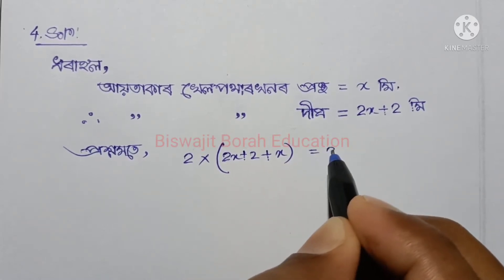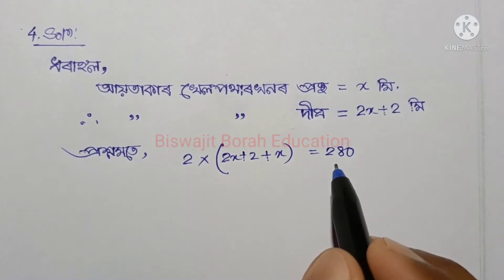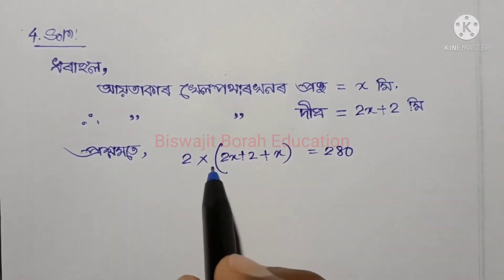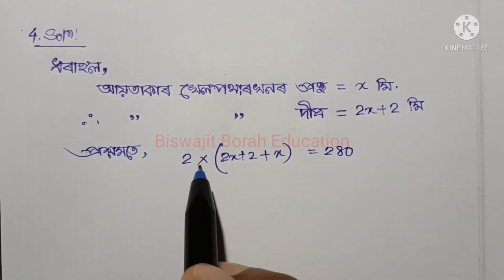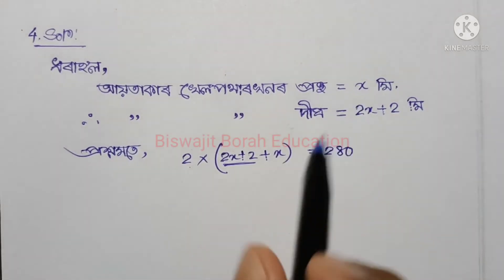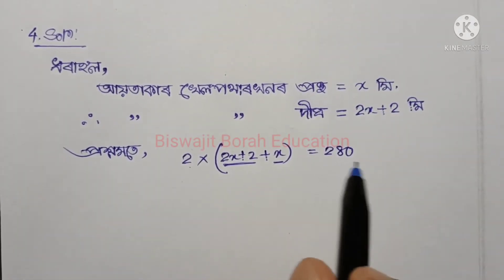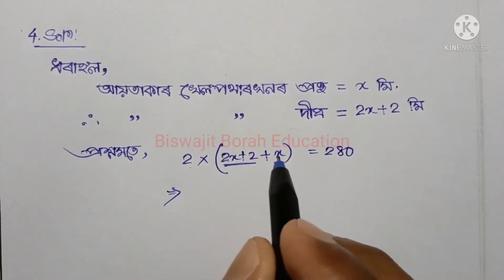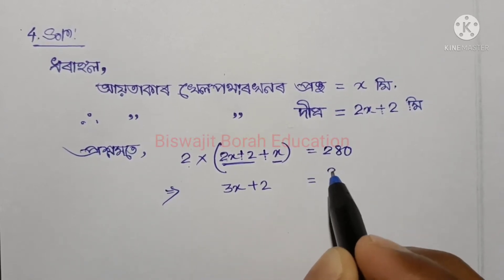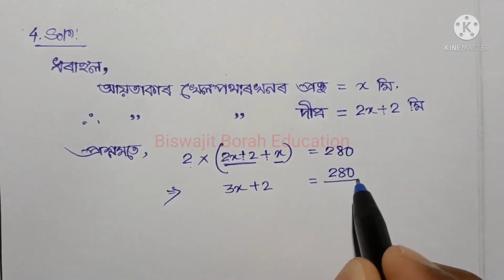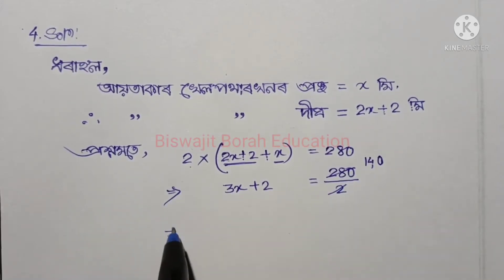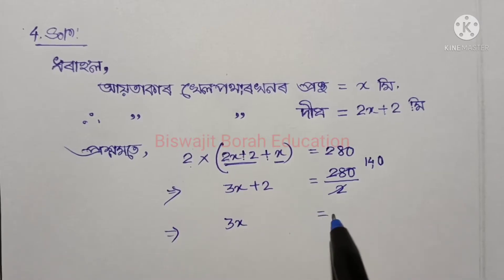Setting up the equation for the problem. We get 2x plus 2, and working through the algebra, we arrive at 3x equal to 140.